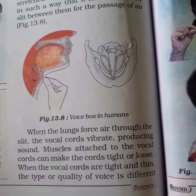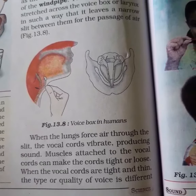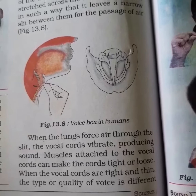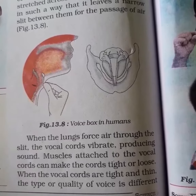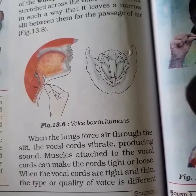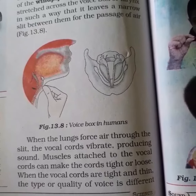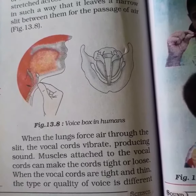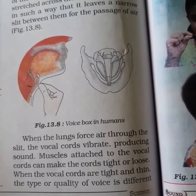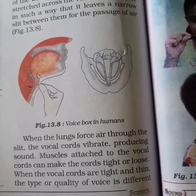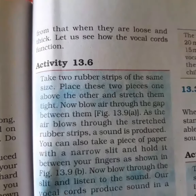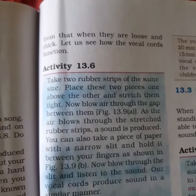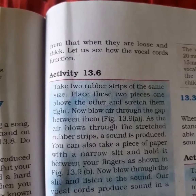Muscles attached to the vocal cords can make the cords either tight or loose. When the vocal cords are tight and thin, the type or quality of voice is different from when they are loose and thick. So the sound produced is different depending on the state of the vocal cords.